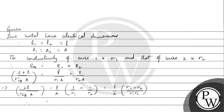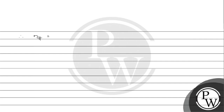We have 2L divided by effective σ into A, equal to L by A into σ1 plus σ2 divided by σ1 into σ2. We can cancel L by A from both sides. Rearranging the terms, the effective conductivity is equal to 2σ1σ2 divided by σ1 plus σ2.